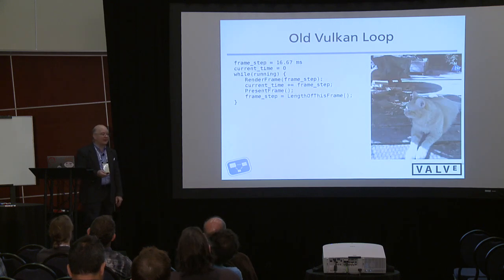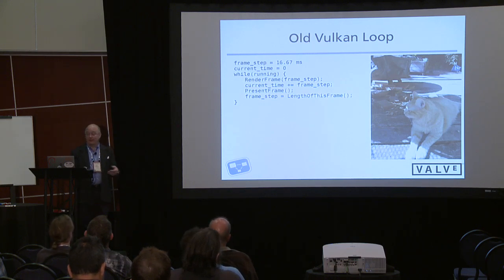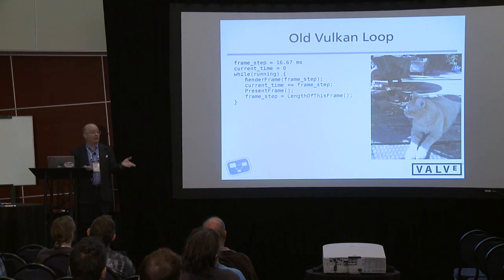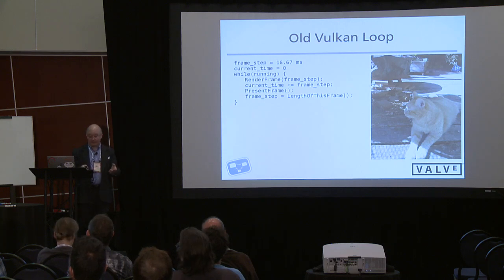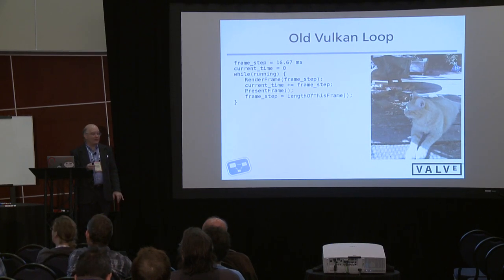This is what Vulkan used to look like. When you had an application, you'd assume you were keeping up with the display, render a frame for the current time, present it, and it would get presented at whatever time. Then for the next frame, you'd render for current time plus however long a frame is — whatever your refresh interval is. You can see this is running open loop with no feedback, so if you make mistakes they're going to persist for a while. You can add some tweaks to kind of recover eventually, but it takes a while.